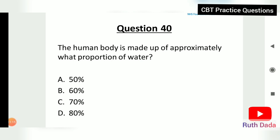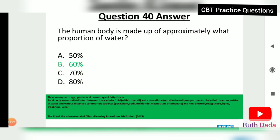Question 40: The human body is made up of approximately what proportion of water? 60 percent. This can vary with age, gender, and percentage of fatty tissue. Total body water is distributed between intracellular and extracellular compartments. Body fluid is composed of water and dissolved solutes including electrolytes such as potassium, sodium, chloride, magnesium, and bicarbonate, and non-electrolytes such as glucose, lipids, creatinine, and urea.